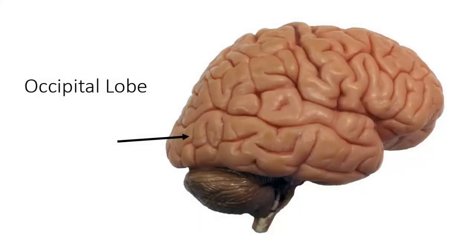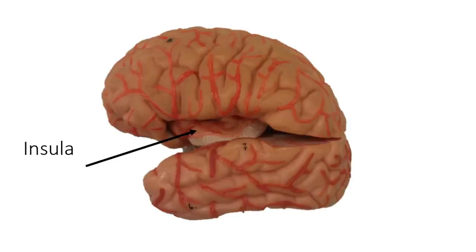Those four lobes you can see if you're holding your brain. Now the fifth lobe you can't see easily. If you look here, there's a little kind of space. What we're going to do is pry that space open — you don't have this in your lab atlas. That is the insula. It is a lobe that is deep to the temporal, parietal, and frontal lobe. That's the only one you cannot see — it's hidden underneath. I've seen that asked on a test before.